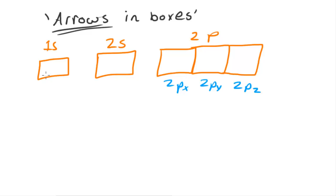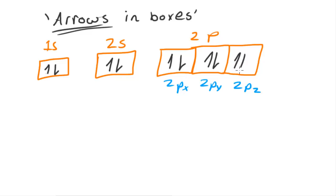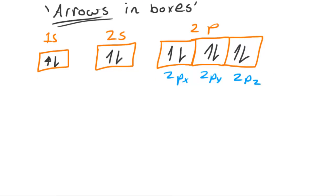We draw arrows in the boxes to represent the fact that electrons have a particular spin — either up or down. Since each orbital contains two electrons with opposite spin, we draw one arrow pointing upwards and one pointing downwards in each box. So for neon: one up, one down in 1s; one up, one down in 2s; and one up, one down in each of the three 2p boxes. These half-arrows represent paired electrons filling the orbitals.